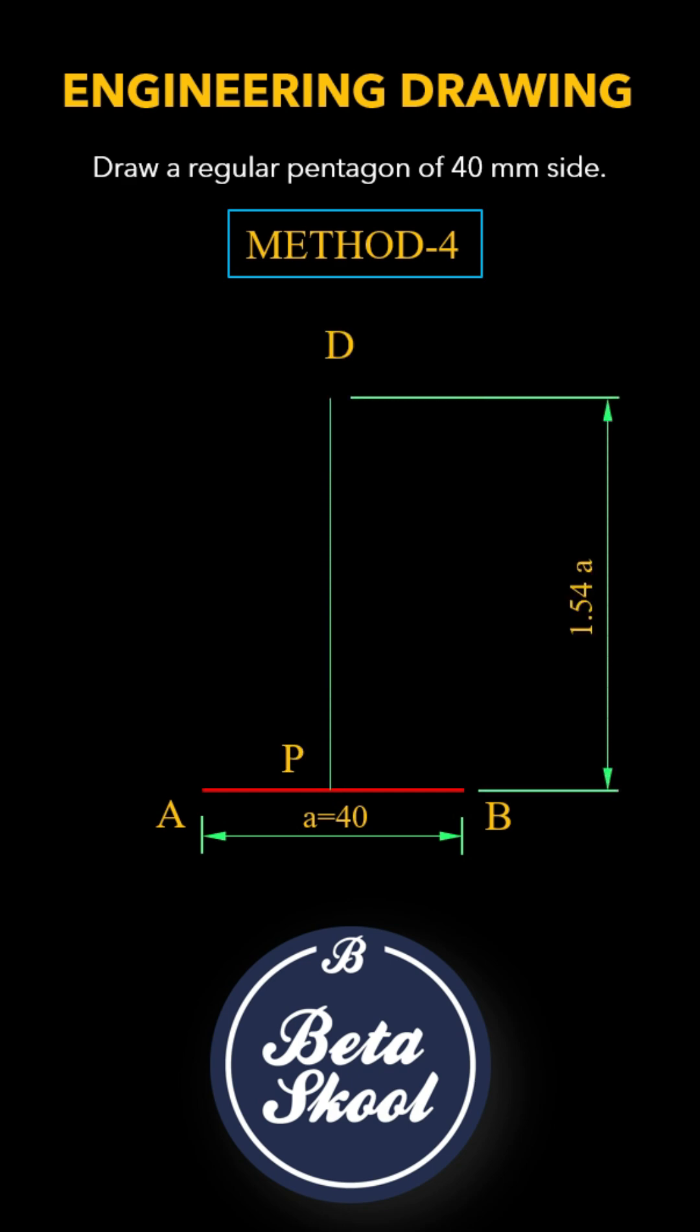We now set PD to exactly 1.54 times the length of AB. Precision is key here.